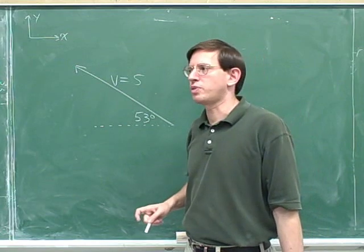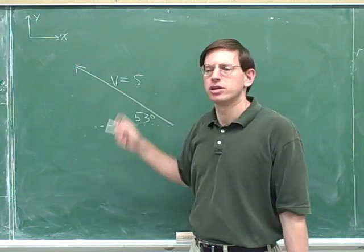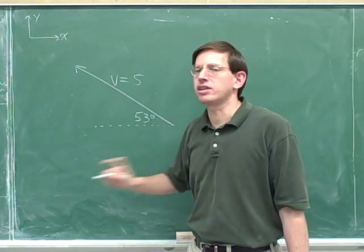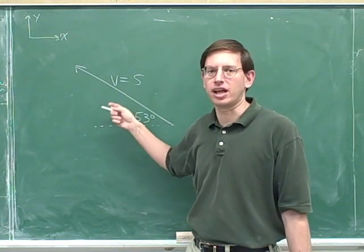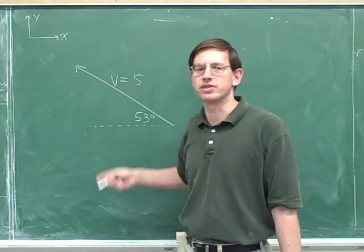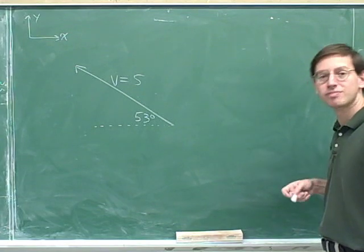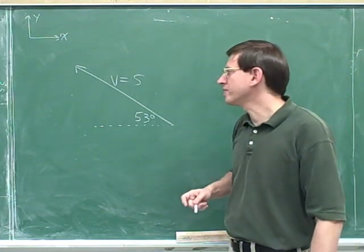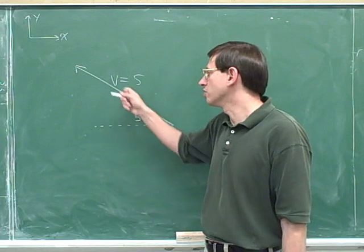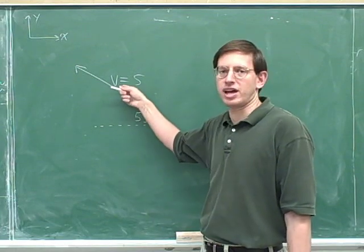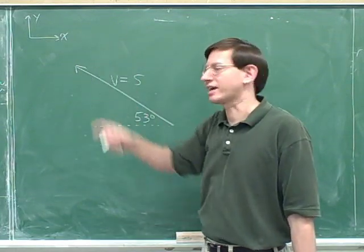The first thing I'd like you to do is pause the video and draw the components. Don't worry about calculating any numbers — just try to draw the triangle that indicates the components for this vector. Remember that we have to draw a triangle that uses the overall vector as the hypotenuse, and the legs should be parallel to the axes.